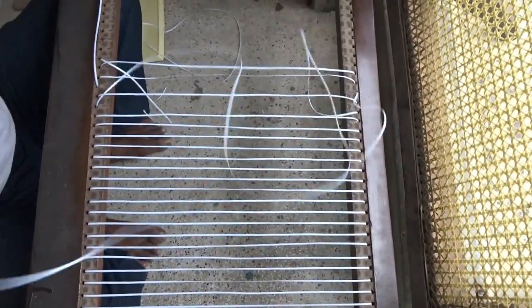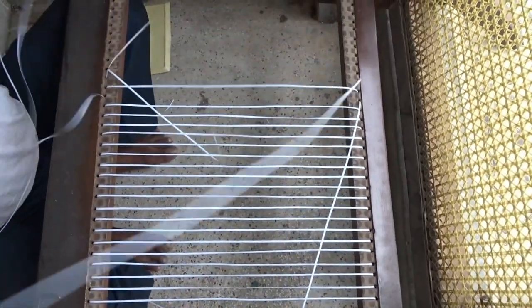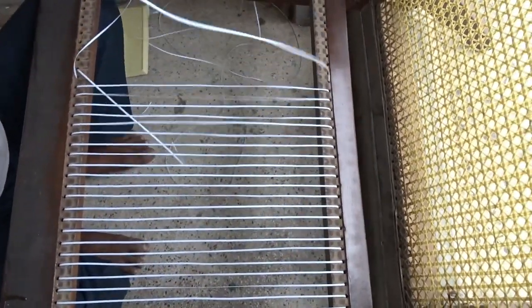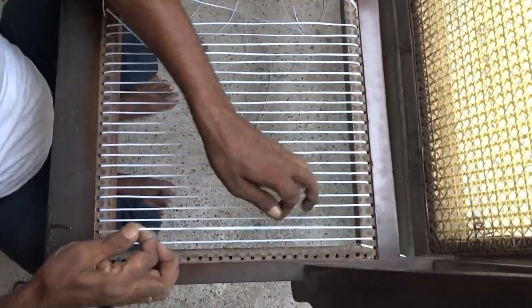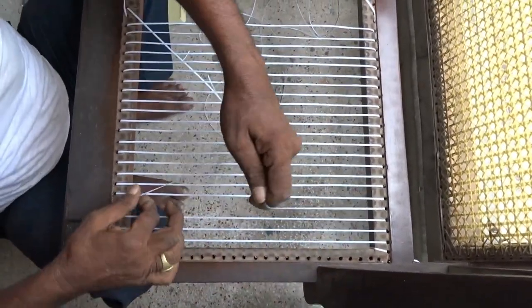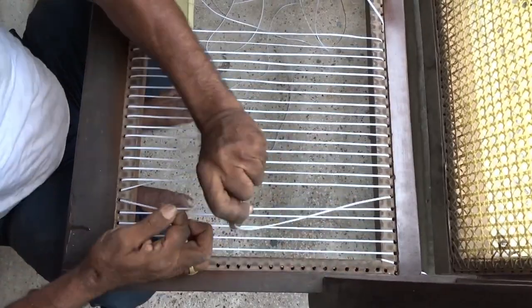The right shiny side of the fiber is always facing upward. Pulling the fiber to make the weaving tight and accurate.